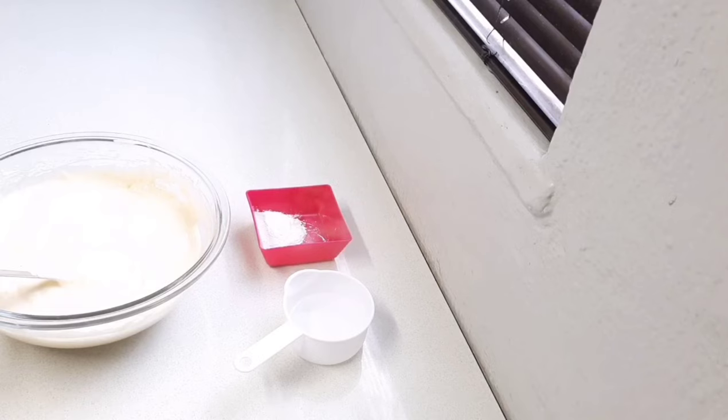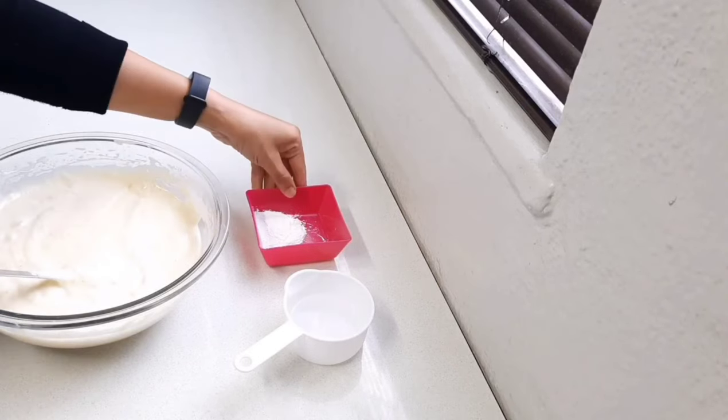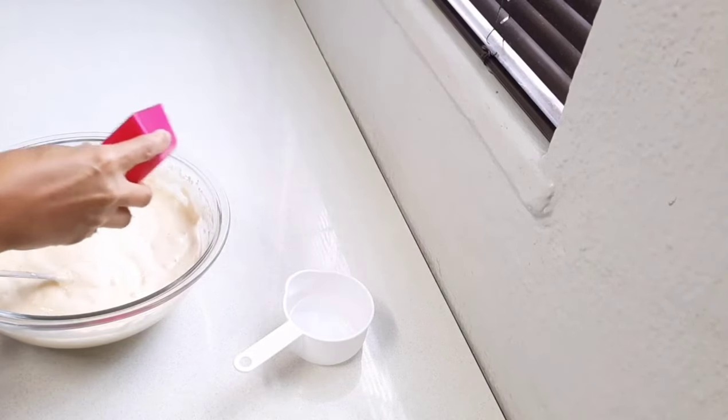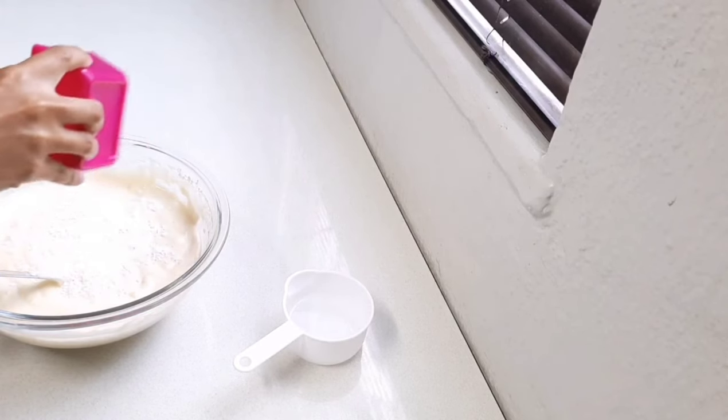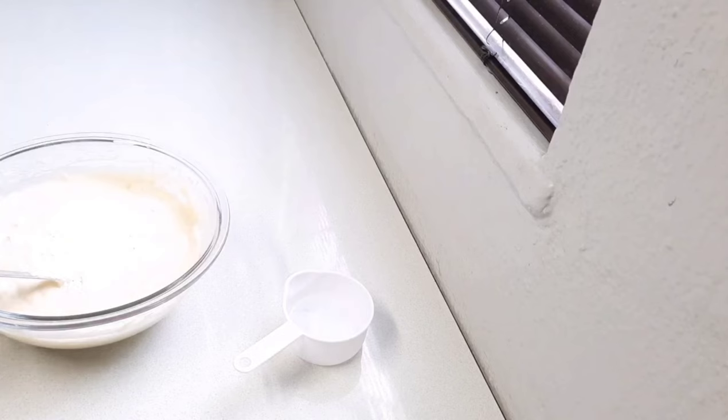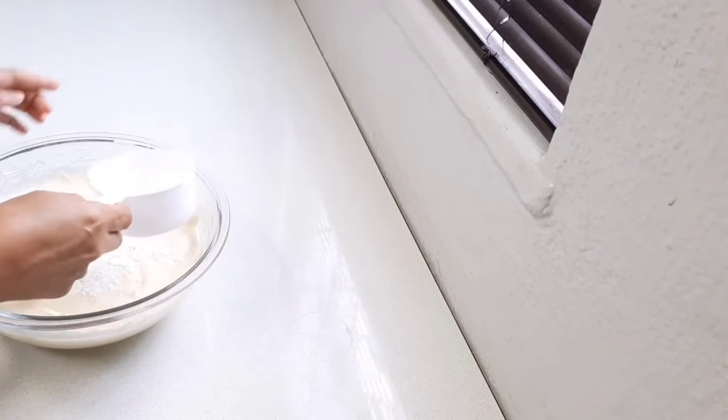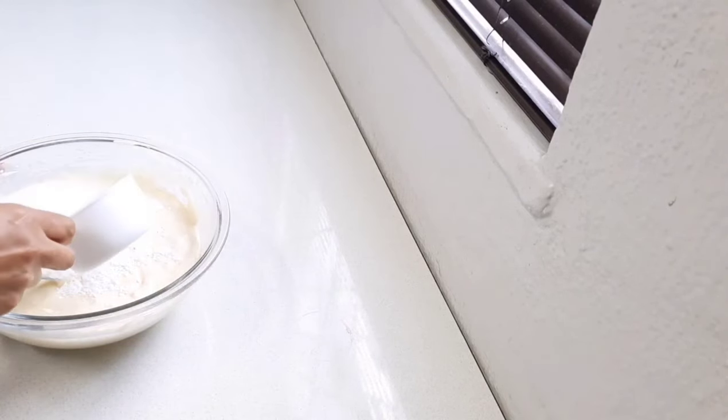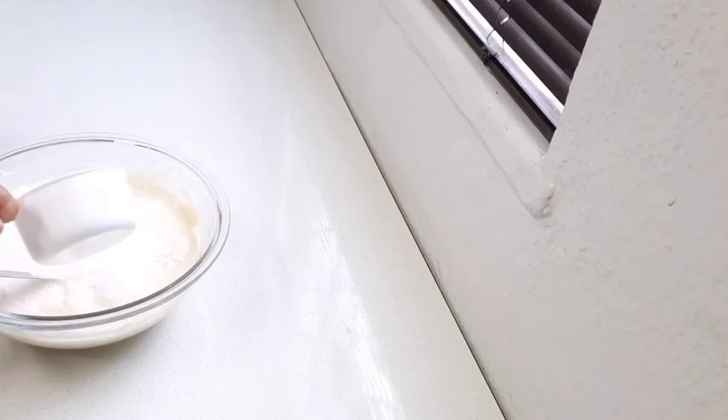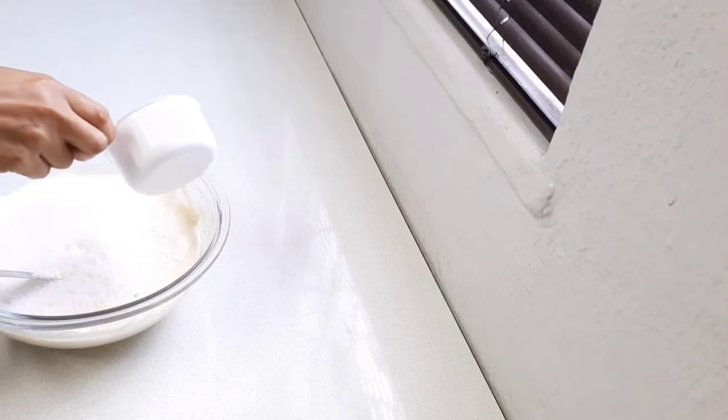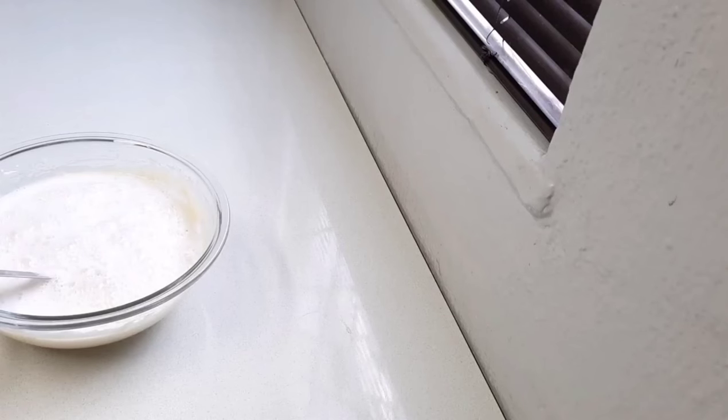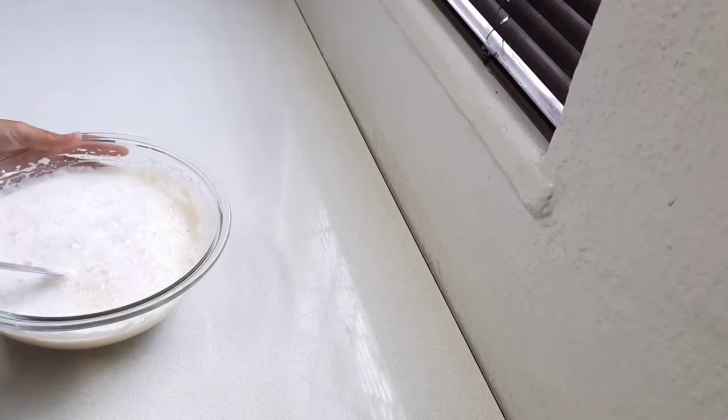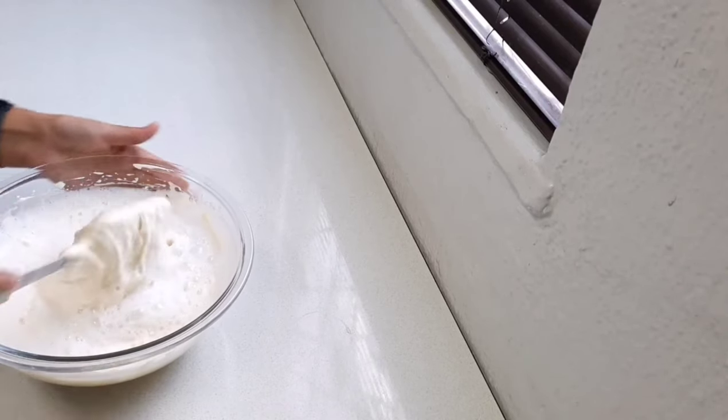So once your flour is incorporated, you're going to add three teaspoons of baking powder and one quarter cup of boiling water, and this will cause a bubbling effect. And you'll just fold it in.